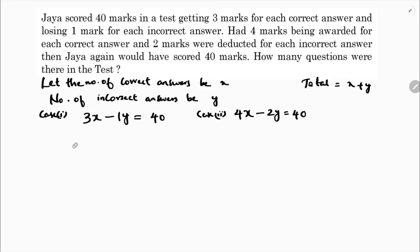Now if I simplify these two equations, the two equations are 3x minus y equals 40, and 4x minus 2y equals 40. I will eliminate. First equation I multiply with 2, second one with 1. I am making the coefficients of y equal.